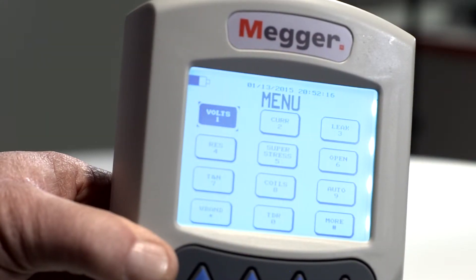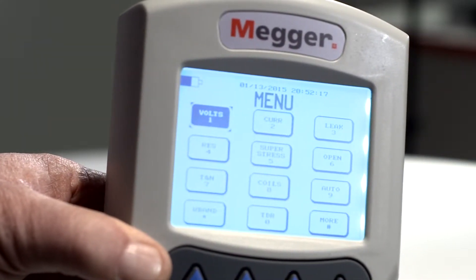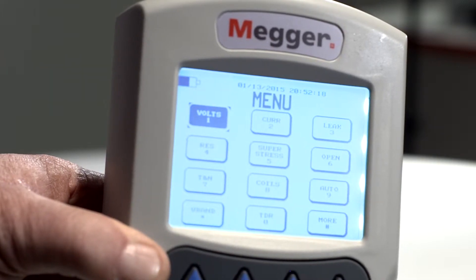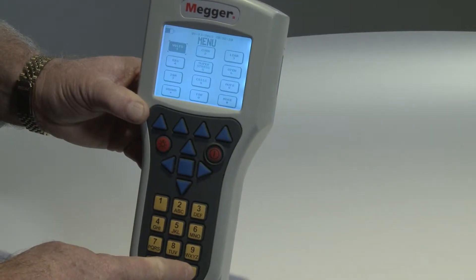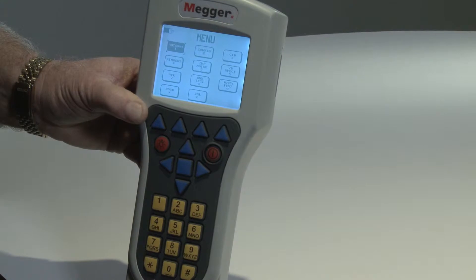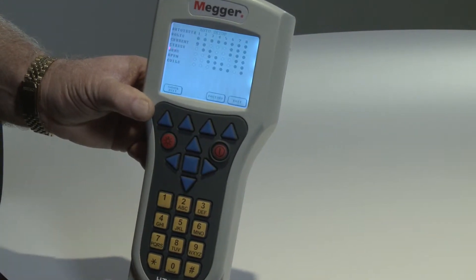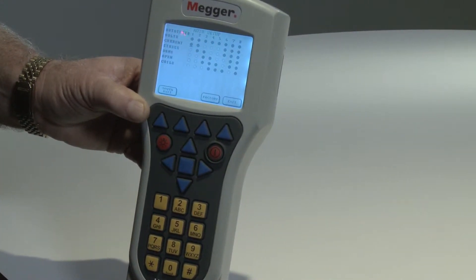From the main menu, access the auto test setup by pressing the pound sign on the alphanumeric keypad and then the number one on the next More menu. The auto set screen will display.